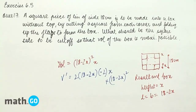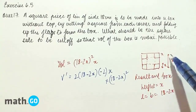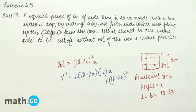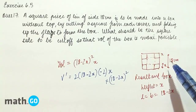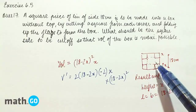The problem states: a square piece of tin of side 18 cm is to be made into a box without top by cutting a square from each corner and folding up the flaps to form the box.